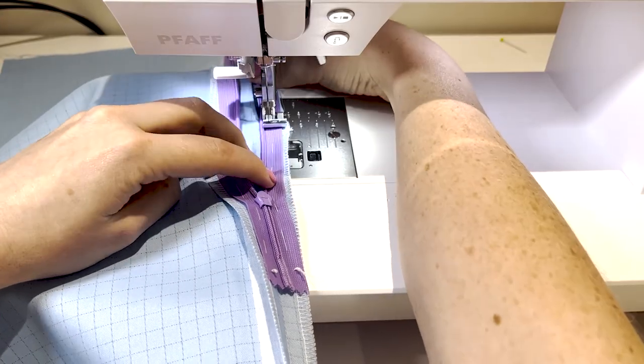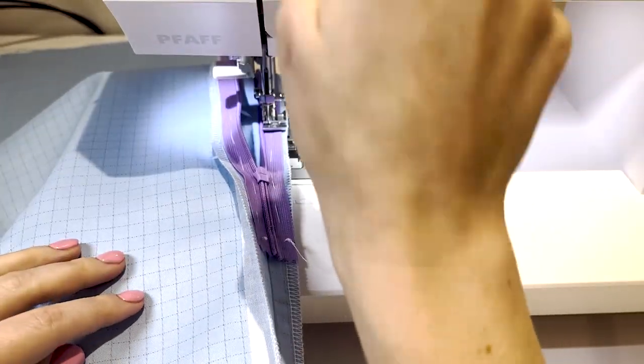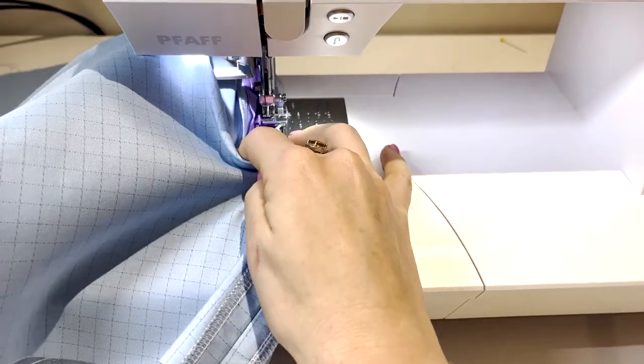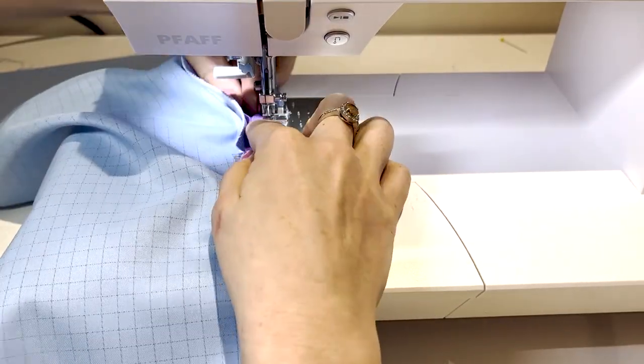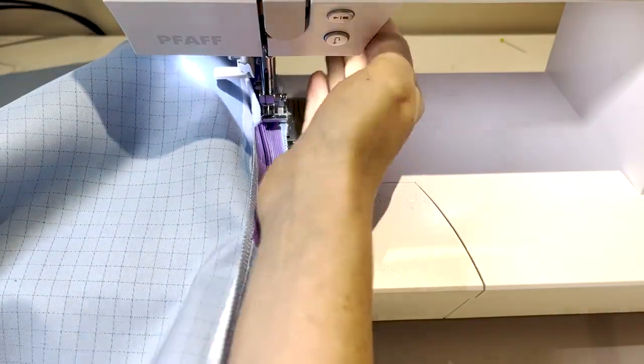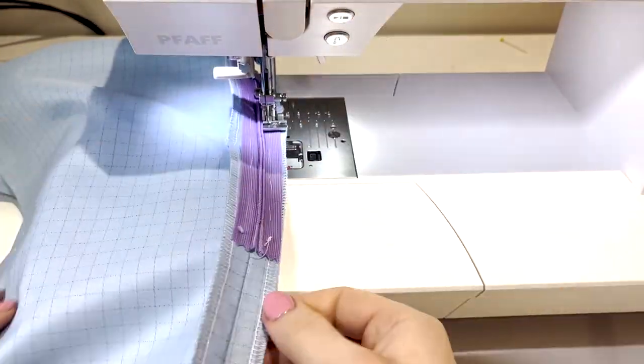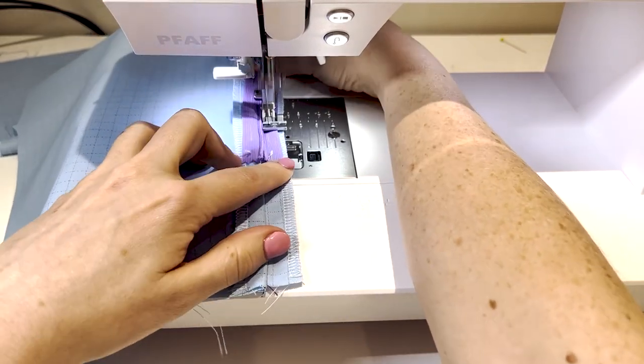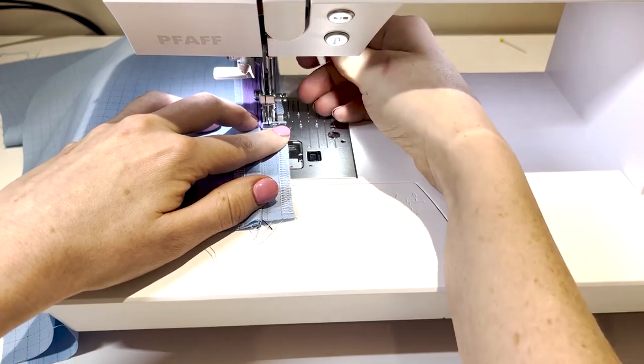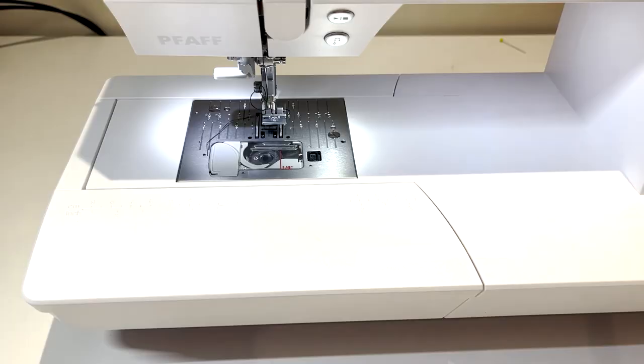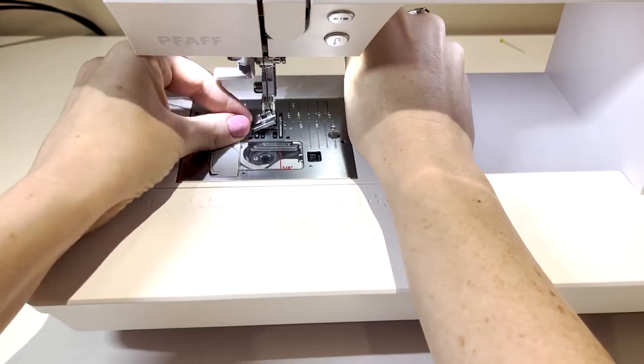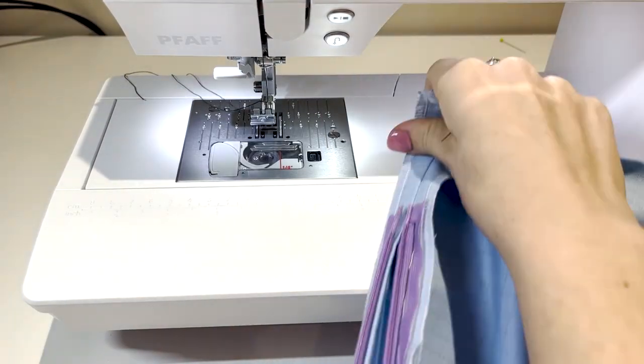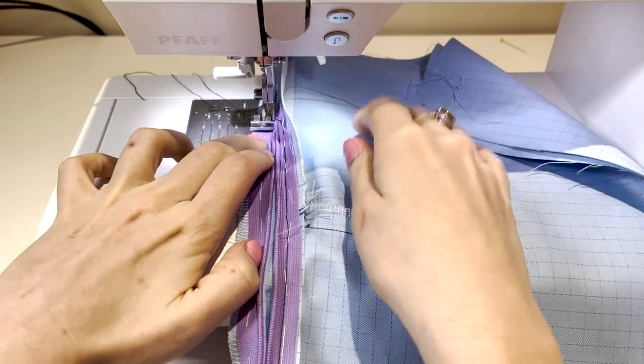At the three quarter point, leave your needle down and lift your footer and raise your zipper to the top, then lower your footer again and continue down to the base of the zipper. Remember to backstitch at the end to lock everything in place. Repeat this on the other side, switching your foot over if required.